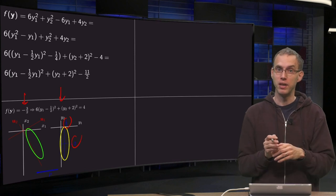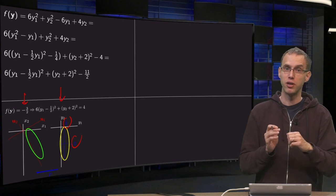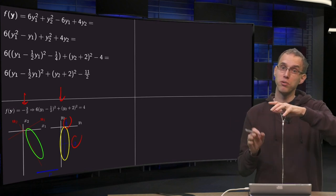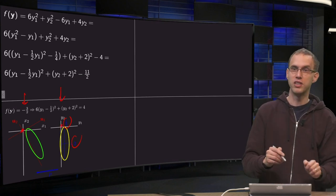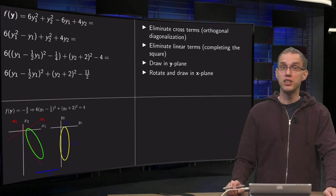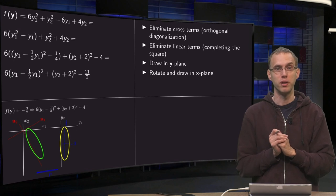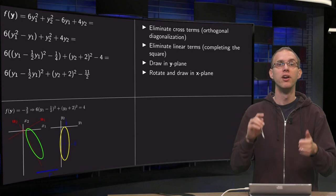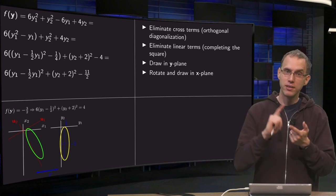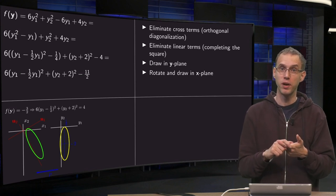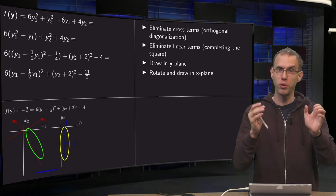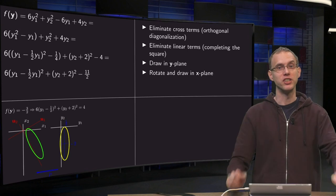To get the figure back in the X plane, we use the same trick as before with only mixed terms: going from Y to X just requires rotating according to the P matrix. So we take this shifted ellipse and rotate the whole plane around the origin, giving a shifted and rotated ellipse in the X plane. To summarize: first eliminate the cross terms using the quadratic part only. Then eliminate the linear terms by completing the square. Draw the result in the Y plane — no cross terms, no linear terms — and then use your P matrix to rotate back to the X plane.